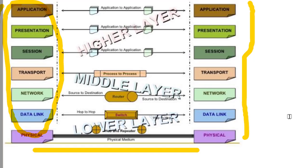Data transfers from top to bottom on the sending side, then through physical cabling to the destination, then bottom to top: Physical layer up to Data Link, Network, Transport, Session, Presentation, then Application. So you understand how data is communicated — for example, I'm using Chrome to talk to you, which is my application layer.